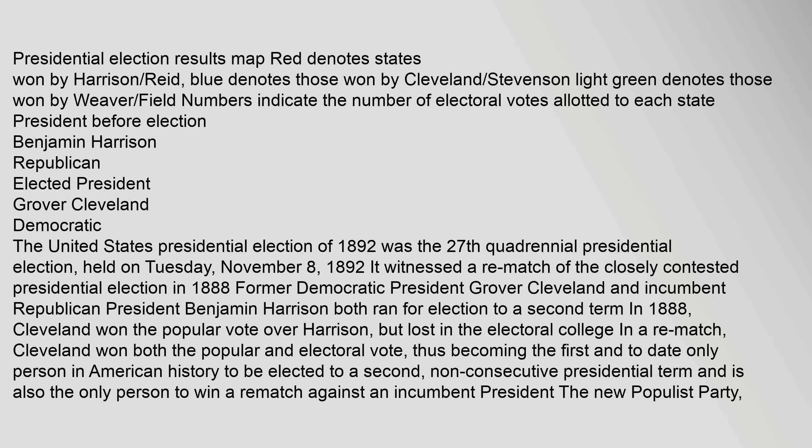Presidential Election Results Map: Red denotes states won by Harrison and Reed. Blue denotes those won by Cleveland and Stevenson. Light Green denotes those won by Weaver and Field. Numbers indicate the number of electoral votes allotted to each state. President before election: Benjamin Harrison, Republican. Elected President: Grover Cleveland, Democratic.